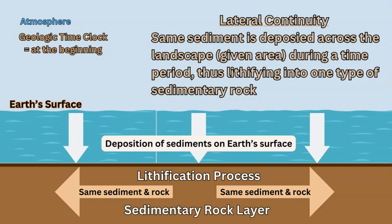Lateral continuity is a principle defined by the same material of sediment being deposited in a certain area and forming a certain rock to a certain thickness, based on how long it's been deposited. It's going to be the same rock — for example, sandstone — for as long as there is material to be deposited, unless there are any changes on the sides in terms of the depositional environment, which would change the material or the amount of material being deposited.